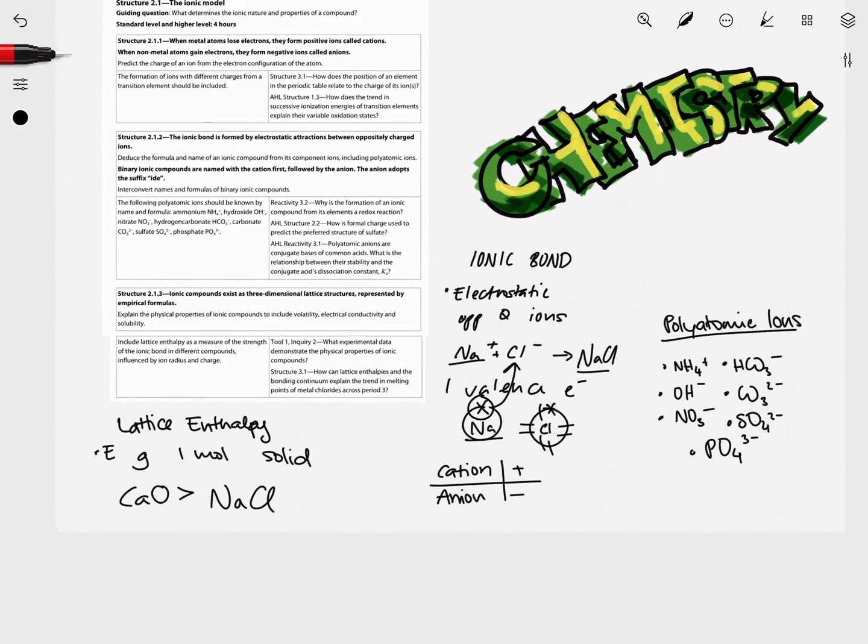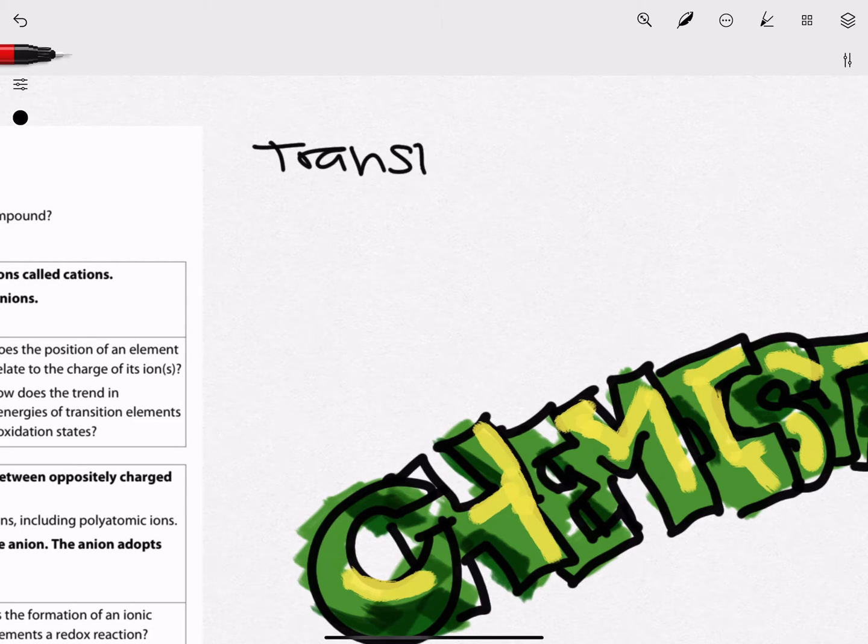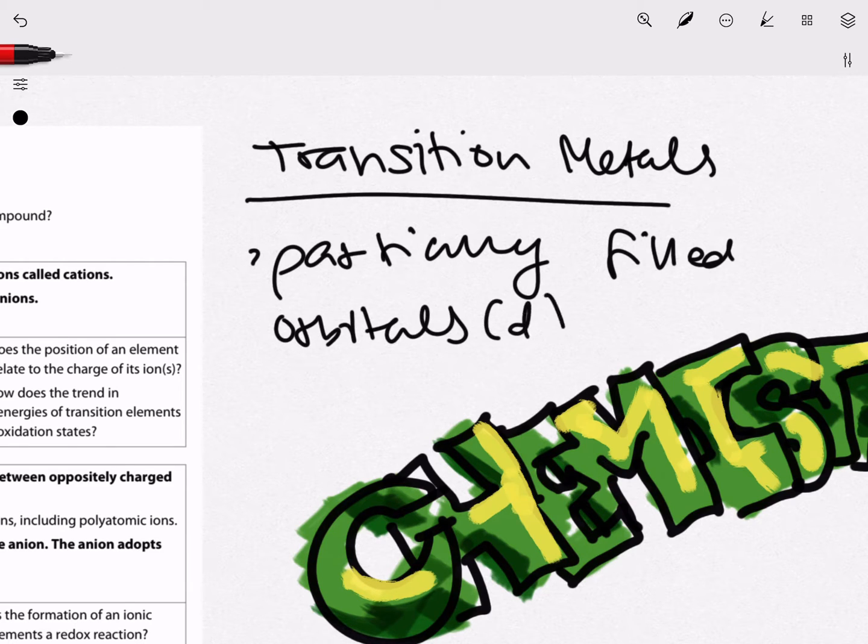A little exception that we will have to look at will be our transition metals. When I say exception, I mean that transition metals can form ions which are not isoelectronic to noble gases. This is because they can have partially filled d orbitals. And oftentimes, you can form more than one ion with your transition metals. Do not worry about memorizing the charges of specific ions because you will be given a specific periodic table with these in your chemistry data booklet in the exams.